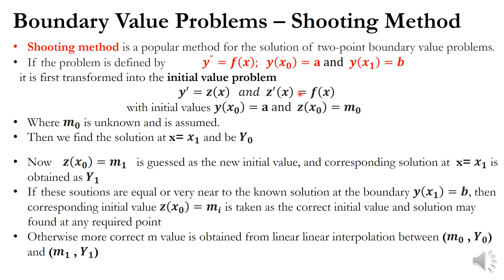For the first initial value problem, y of x-naught equal to a is the initial condition. For the second problem, z of x-naught equal to m0 is the initial condition. Unfortunately, we don't know this initial value m0.